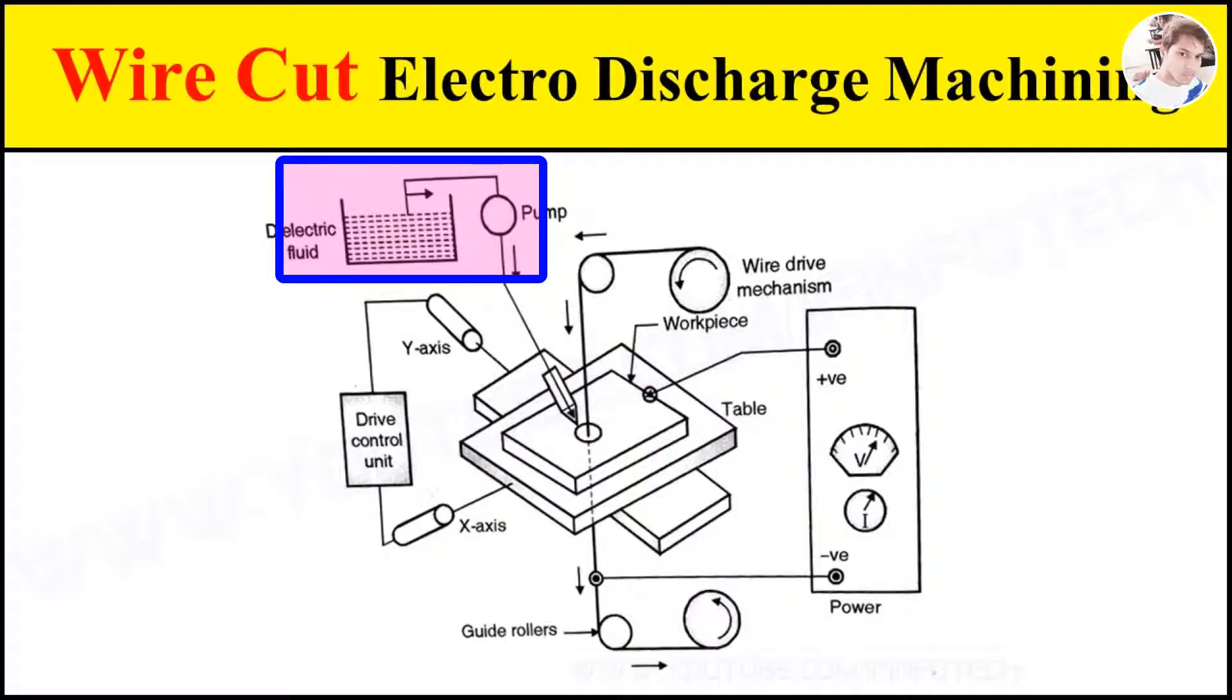Next is the dielectric fluid supply unit. It is necessary to inject the dielectric fluid, usually deionized water or distilled water, at the working zone of wire and workpiece. The dielectric is stored in a reservoir and it is pumped by using a pump and allowed to pass through nozzle. The nozzle is positioned near the working zone and allows stream of dielectric as per requirement.